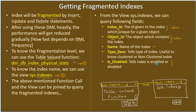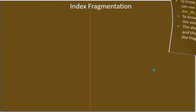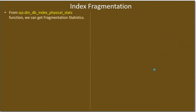If an index is in a disabled state we don't need to defragment it or consider it. So whatever index is enabled and has fragmentation more than 30%, we can take action. From the dm_db_index_physical_stats function we can get the fragmentation statistics.